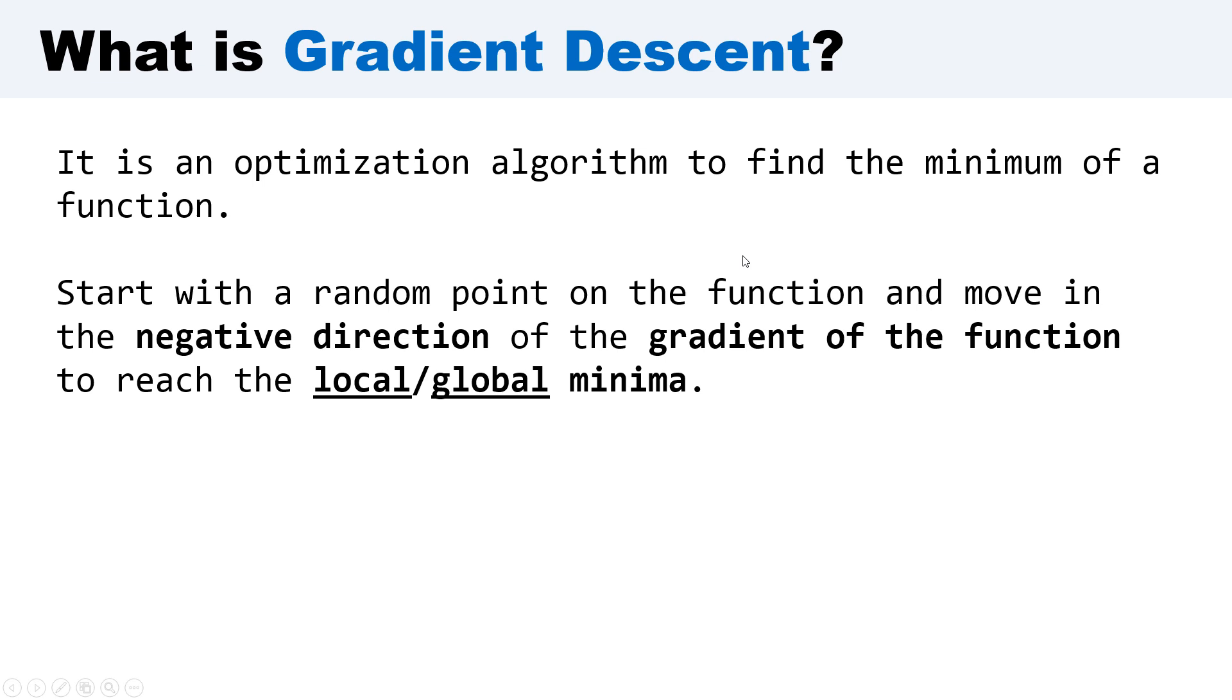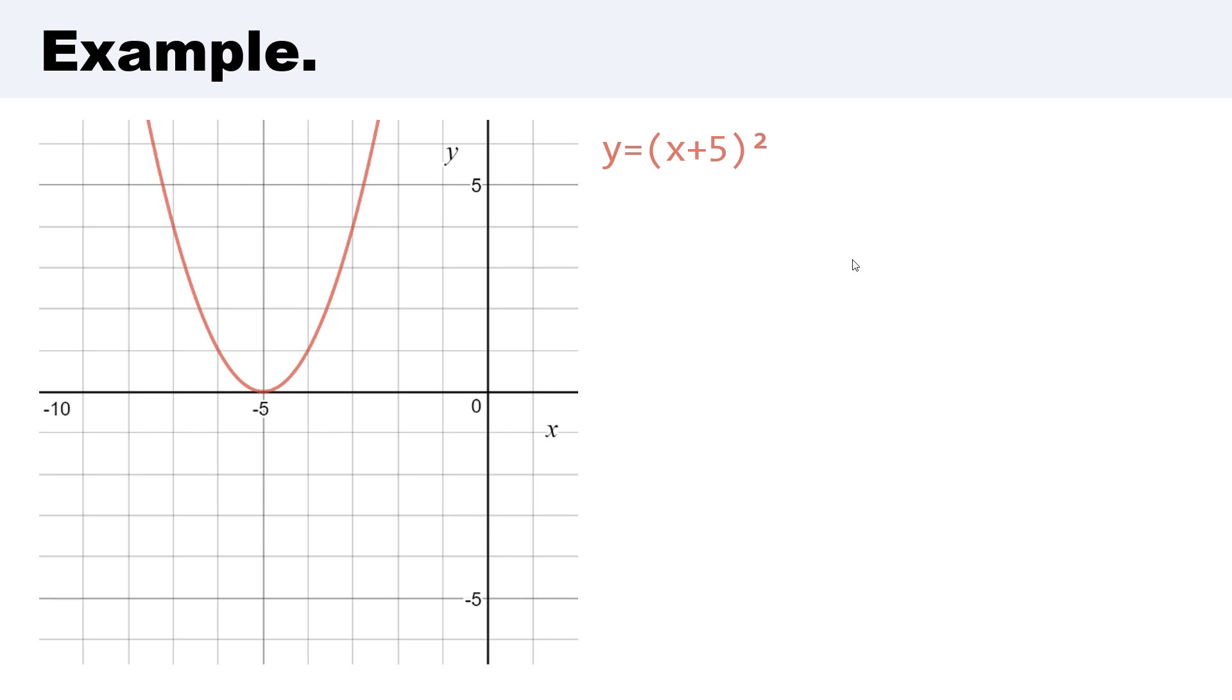We start with a random point on the function and move in the negative direction of the gradient of the function to reach the local or global minimum. Let's start with an example.